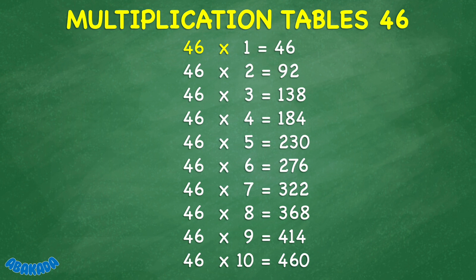46 times 1 equals 46. 46 times 2 equals 92. 46 times 3 equals 138. 46 times 4 equals 184. 46 times 5 equals 230. 46 times 6 equals 276.